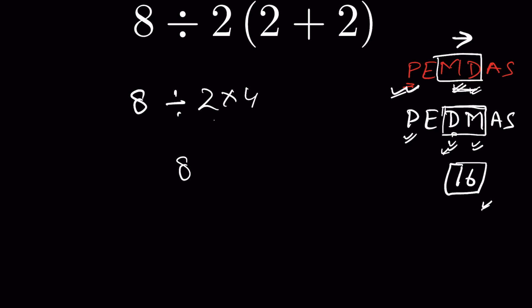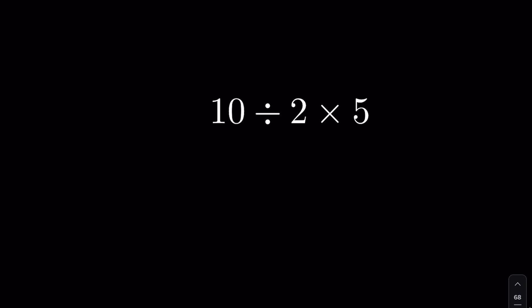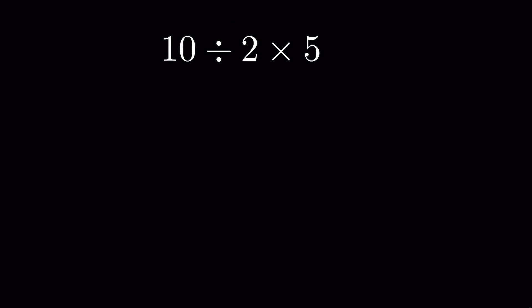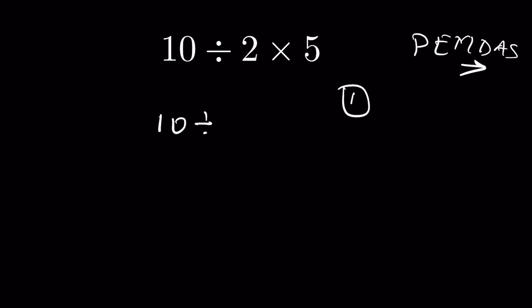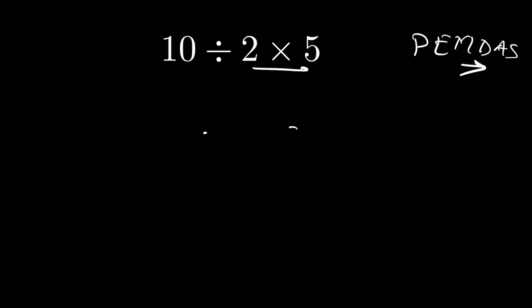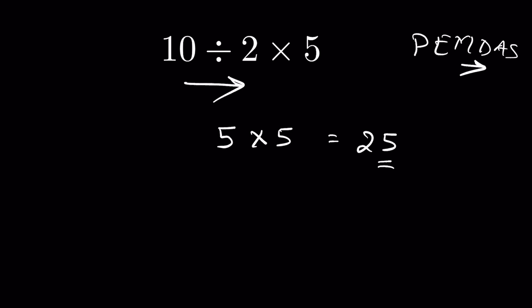The answer is confirmed: 8 divided by 2 is 4, then 4 times 4 is 16. Now let's take another example: 10 divided by 2 times 5. Following PEMDAS or PEDMAS, remember the left-to-right rule. It will not be 2 times 5 first giving 10, then 10 divided by 10 equaling 1. You must go left to right: 10 divided by 2 is 5, then 5 times 5 is 25. So 25 is the correct answer.